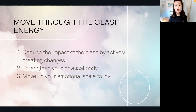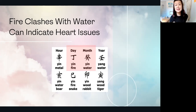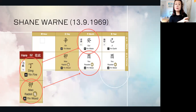I also want to address strengthening your physical body — very important, and a good segue to the two case studies. Looking at this month's energy, there is a very major clash on the heavenly stem: fire clashing with water. This yin fire represents heart issues, blood, and the nervous system. The fire clashing with water can indicate heart issues.